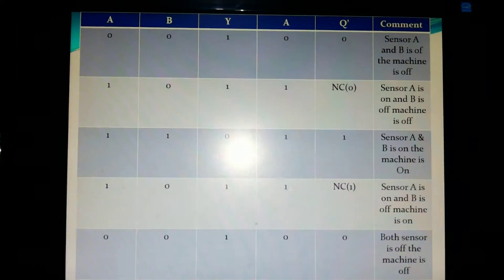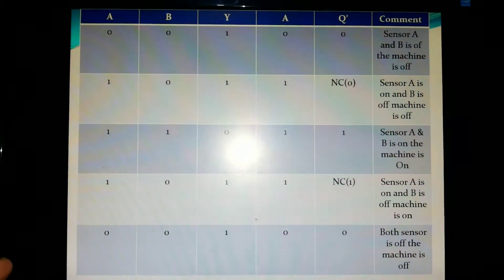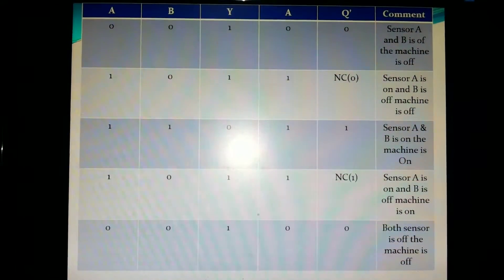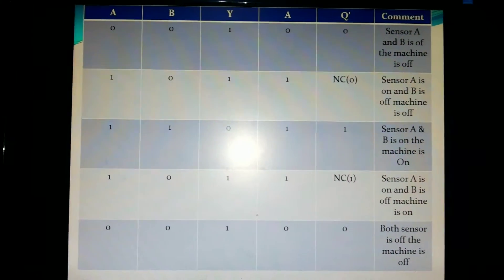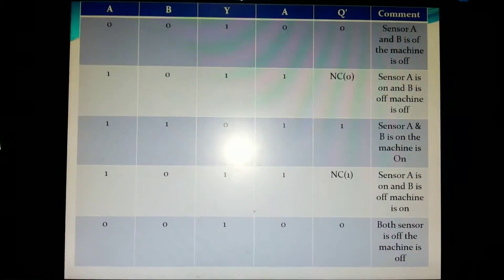Then the combination of SR latch gives us A, then it is 1, 0. So Q bar is 0, which means sensor A and B are on, so the machine is off.